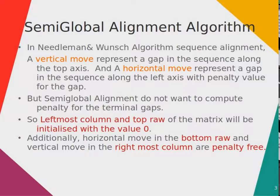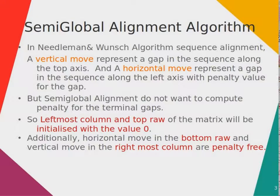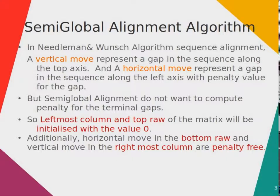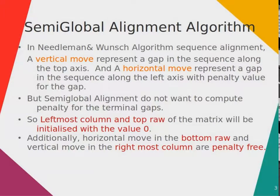In the Needleman-Wunsch algorithm, a vertical move represents a gap in the sequence along the top axis and a horizontal move represents a gap in the sequence along the left axis, with a penalty value for the gap. In semi-global alignment, we do not want to compute a penalty for the terminal gaps, so the leftmost column and top row of the matrix will be initialized with the value zero. Additionally, horizontal moves in the bottom row and vertical moves in the rightmost column are penalty-free.